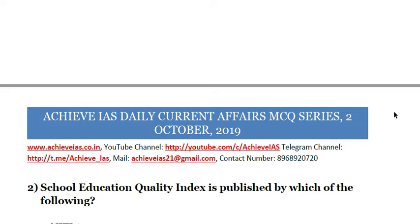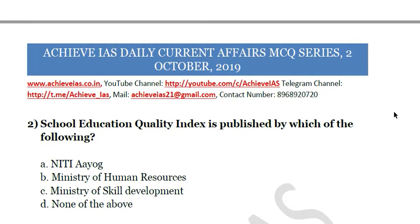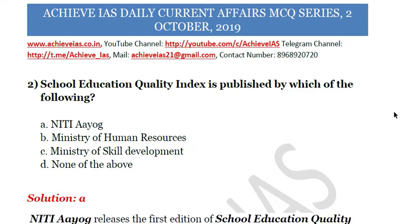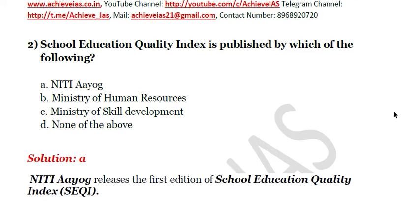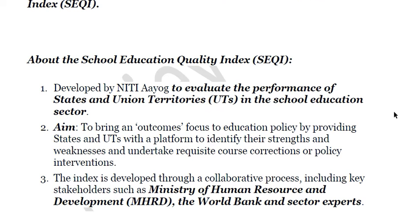The next question: the School Education Quality Index is published by which of the following — A) NITI Aayog, B) Ministry of Human Resources, C) Ministry of Skill Development, D) None of the above? The answer is NITI Aayog. It was recently released; Kerala topped among large states, but if we take overall performance, Chandigarh is at the top. It is released by NITI Aayog to evaluate the performance of states and union territories in the school education sector.